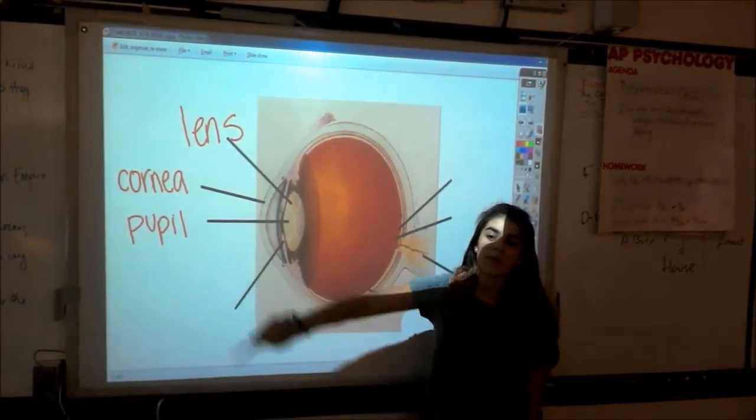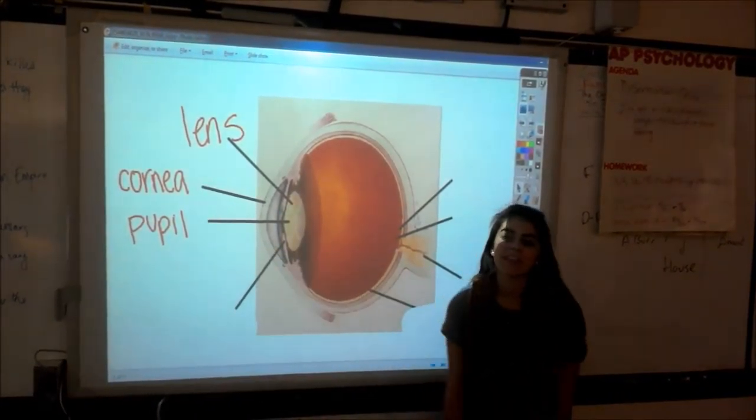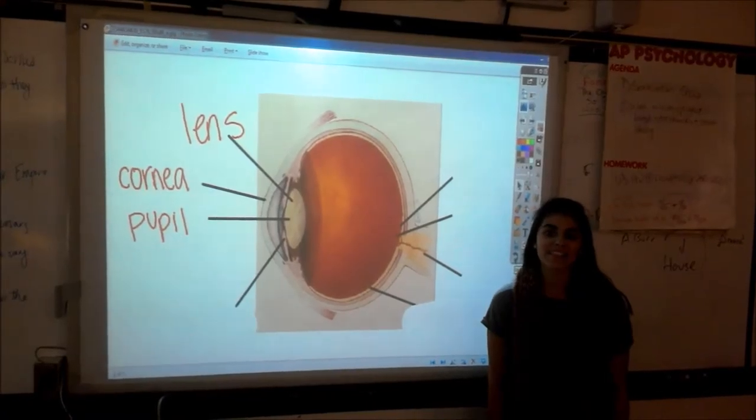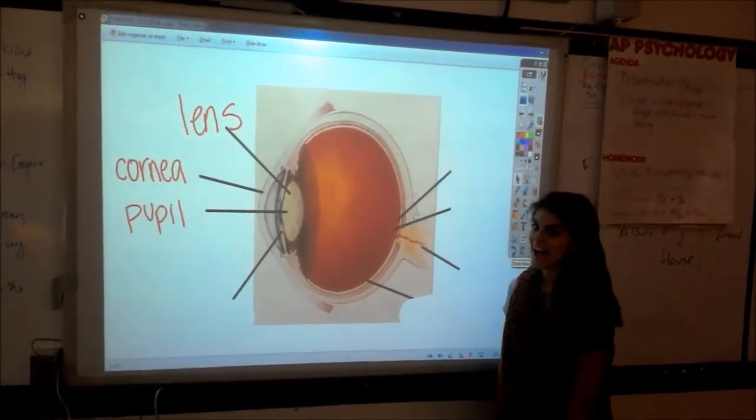This is the pupil. It is the opening of the iris and it is able to dilate and close, determining how much light gets into the eye.